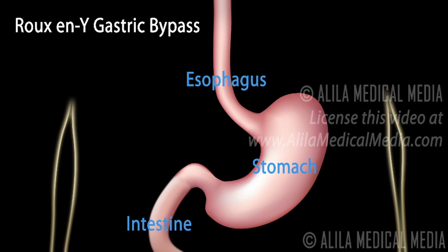Roux-en-Y gastric bypass is the most commonly performed bariatric surgical procedure and is considered the gold standard for weight loss treatment. The procedure involves two steps.